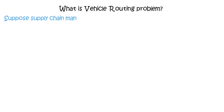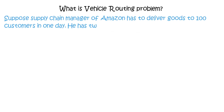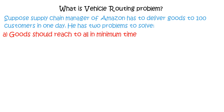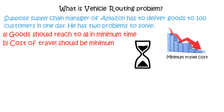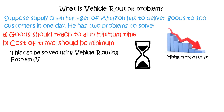What is vehicle routing problem? Suppose a supply chain manager of Amazon has to deliver goods to 100 customers in one day. It has two problems to solve: goods should reach all customers in minimum time, and the cost of travel should be minimum. This can be solved using vehicle routing problem analysis.